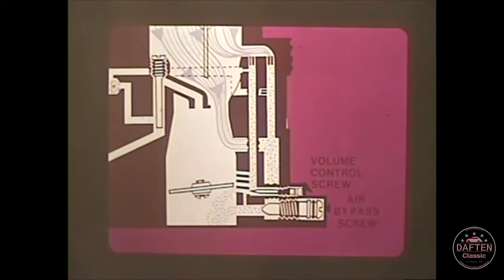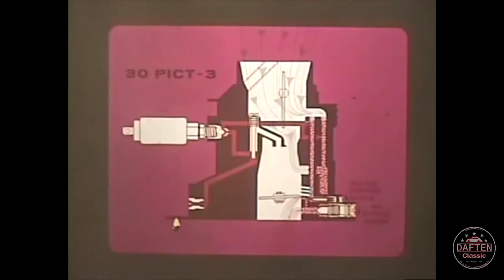The fuel circuit has also been modified and is now connected to a volume control drilling and an air bypass where it mixes with the incoming air. Since the volume control screw is preset at the factory, the air bypass screw controls idle speed and the air fuel mixture is monitored automatically.